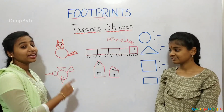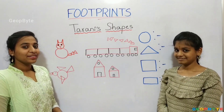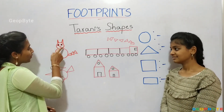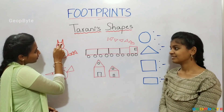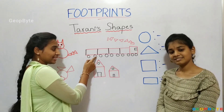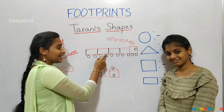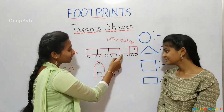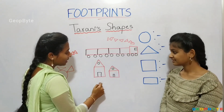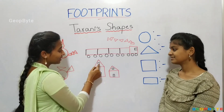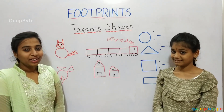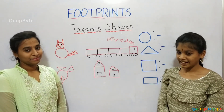Let us identify the shapes in the pictures. First, let us go with circle. We got 18 circles. Let us write 18.